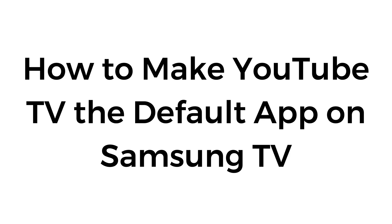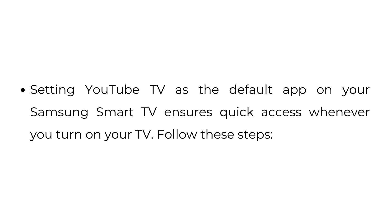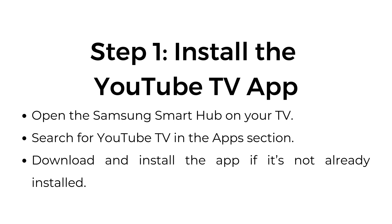How to make YouTube TV the default app on Samsung TV. Setting YouTube TV as the default app on your Samsung Smart TV ensures quick access whenever you turn on your TV. Follow these steps. Step number one: install the YouTube TV app. Open the Samsung Smart Hub on your TV, search for YouTube TV in the app section, and download and install the app if it's not already installed.